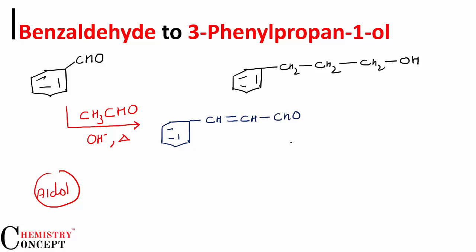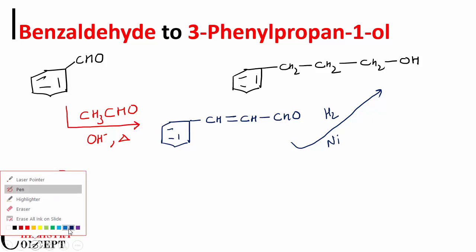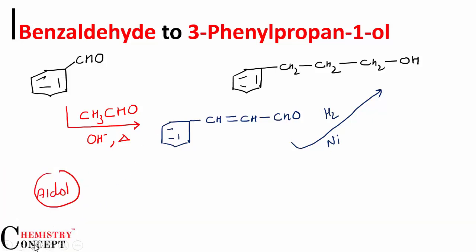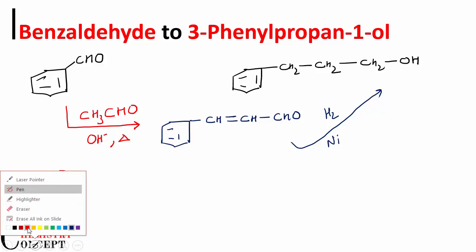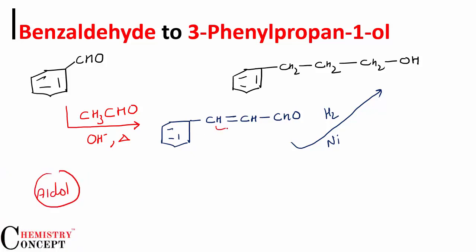Now this compound, on reduction with hydrogen and nickel, will produce our desired product. When we react it with H₂ and Ni, the double bond gets reduced to a single bond, and the aldehyde gets reduced to an alcohol.